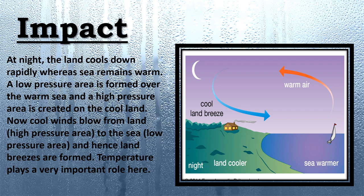Atmospheric pressure is an indicator of weather. When a low pressure system moves into an area, it usually leads to cloudiness, wind, and precipitation. And when a high pressure system creates, it leads to fair, calm weather.